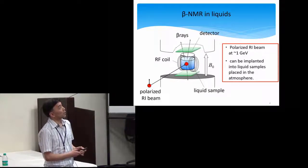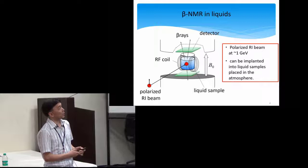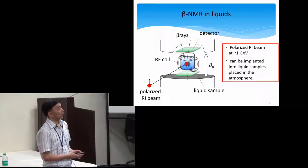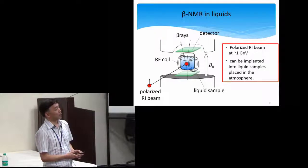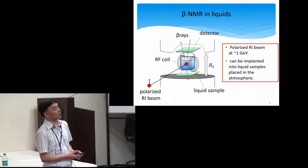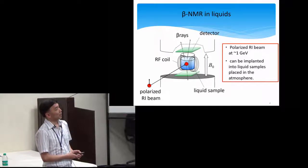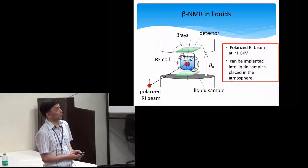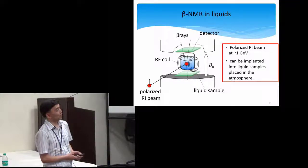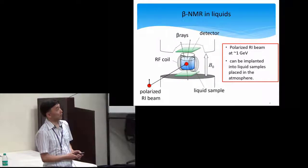We are using the beta-NMR technique and applying it to liquid materials using a spin-polarized radioisotope beam with total kinetic energy of about 1 GeV. So the beam can be easily implanted into the liquid sample, which is placed in the atmosphere.